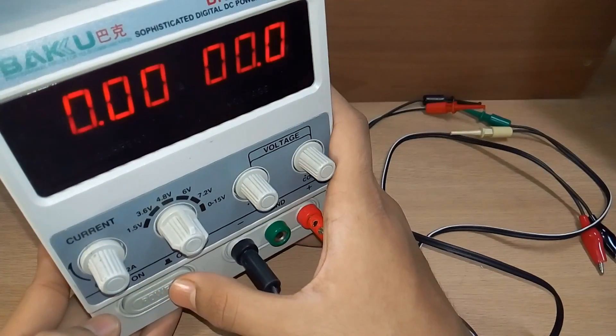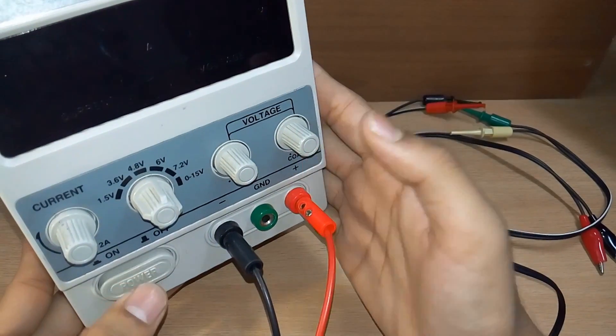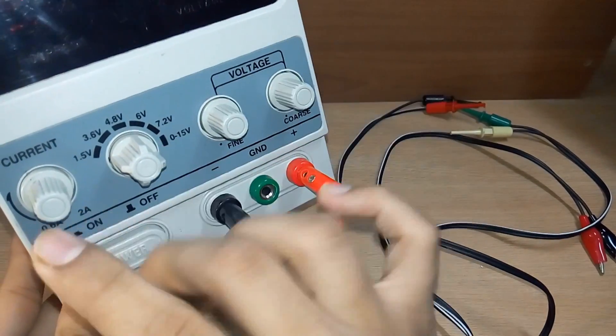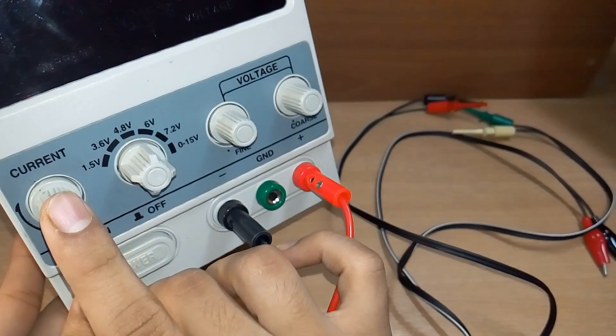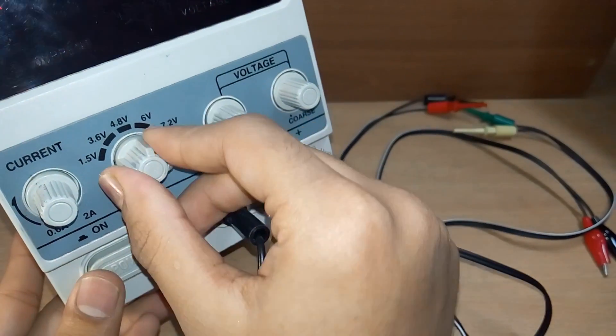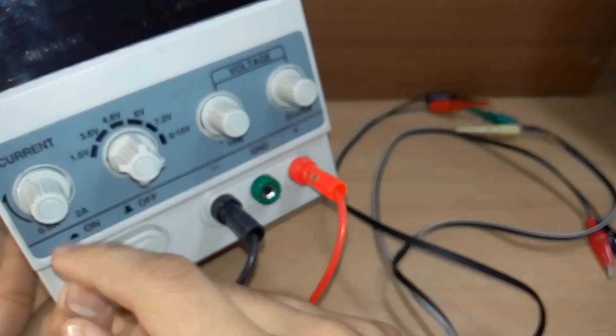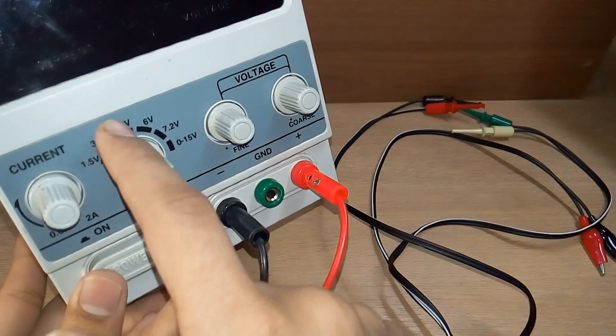Here we see four knobs - three controlling voltages, one for controlling the current. We can fix our voltage to these levels. The 0 to 15 volt is the variable voltage level.